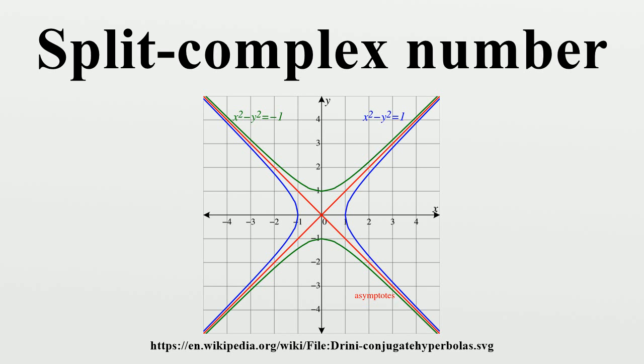The conjugate satisfies similar properties to usual complex conjugate, namely: z̄̄ equals z, z+w̄ equals z̄+w̄, zw̄ equals z̄w̄.